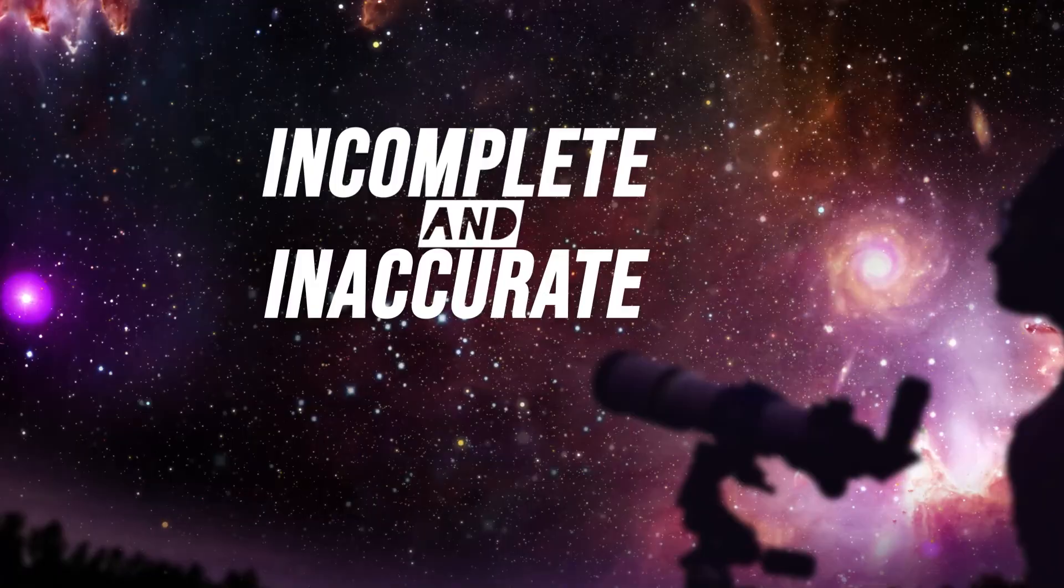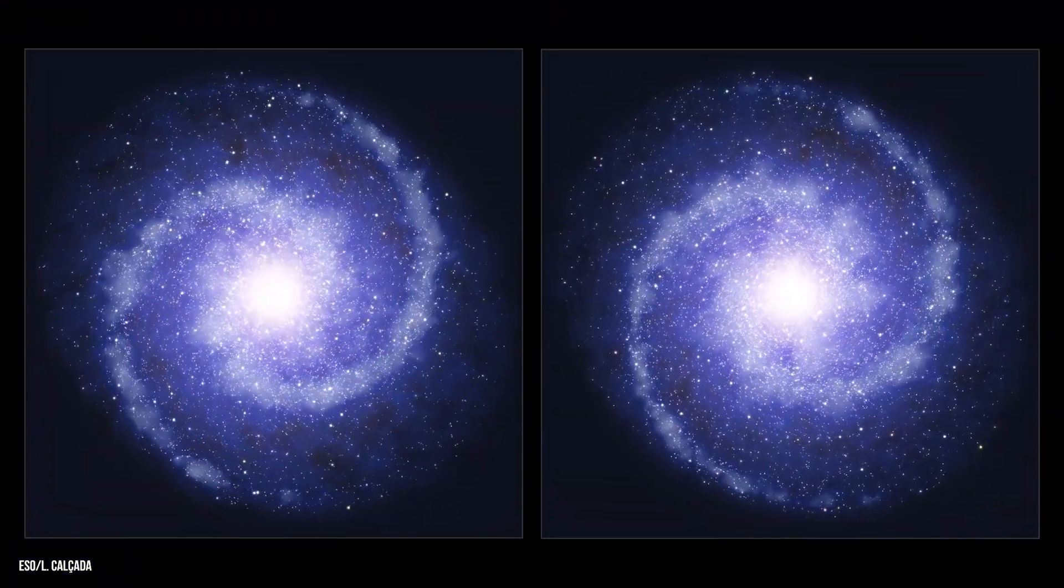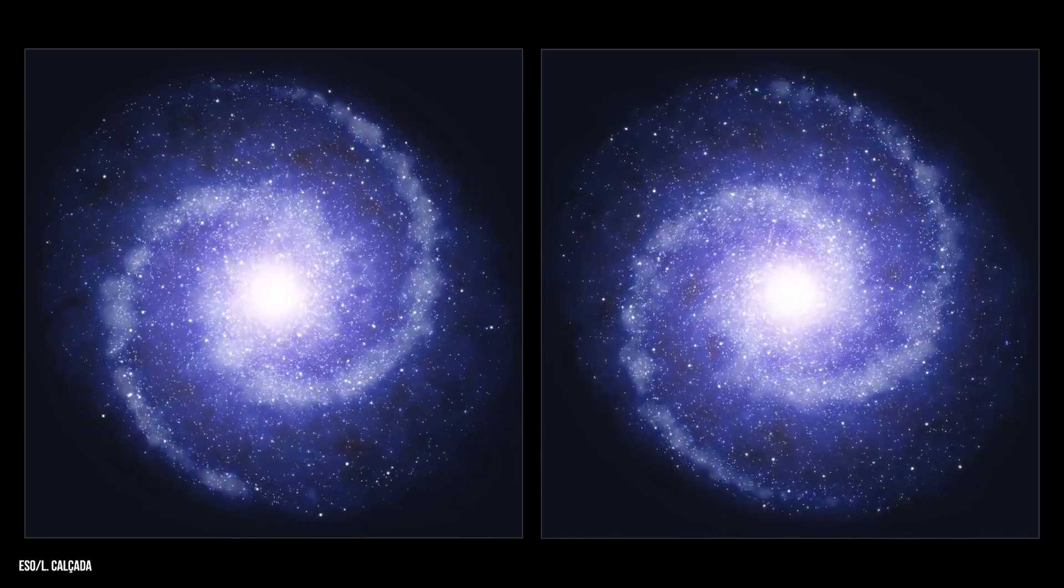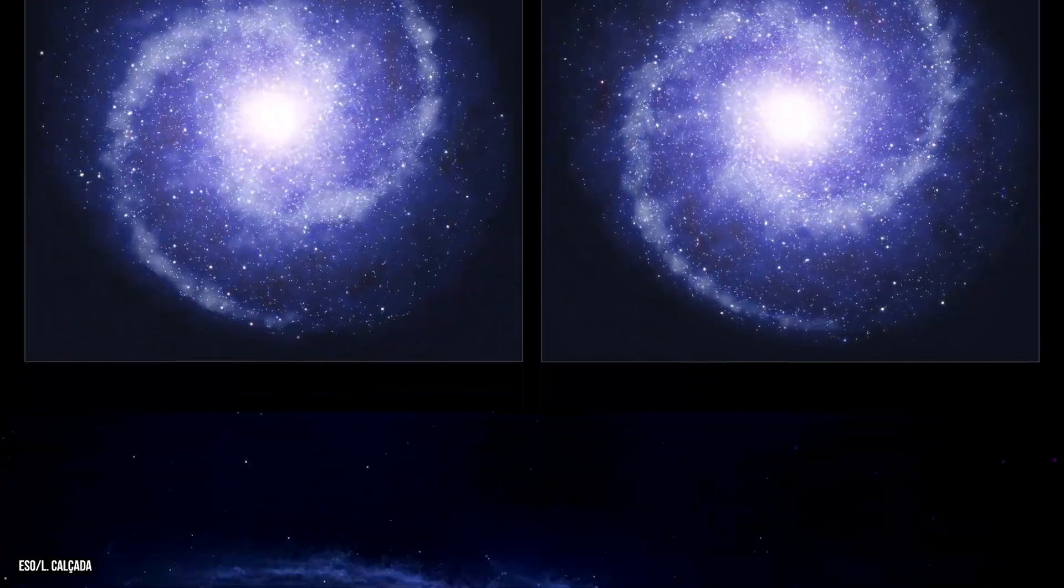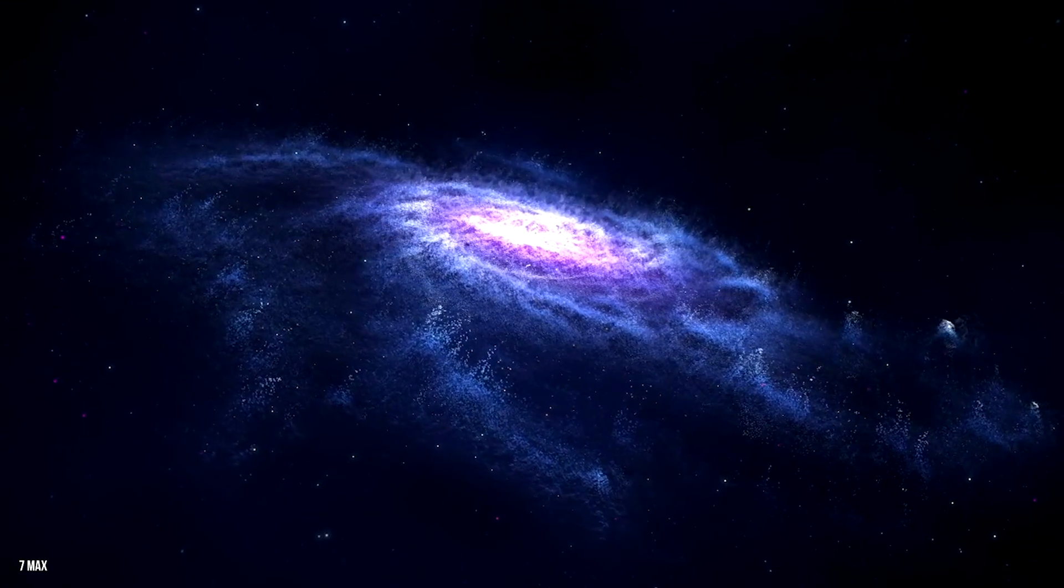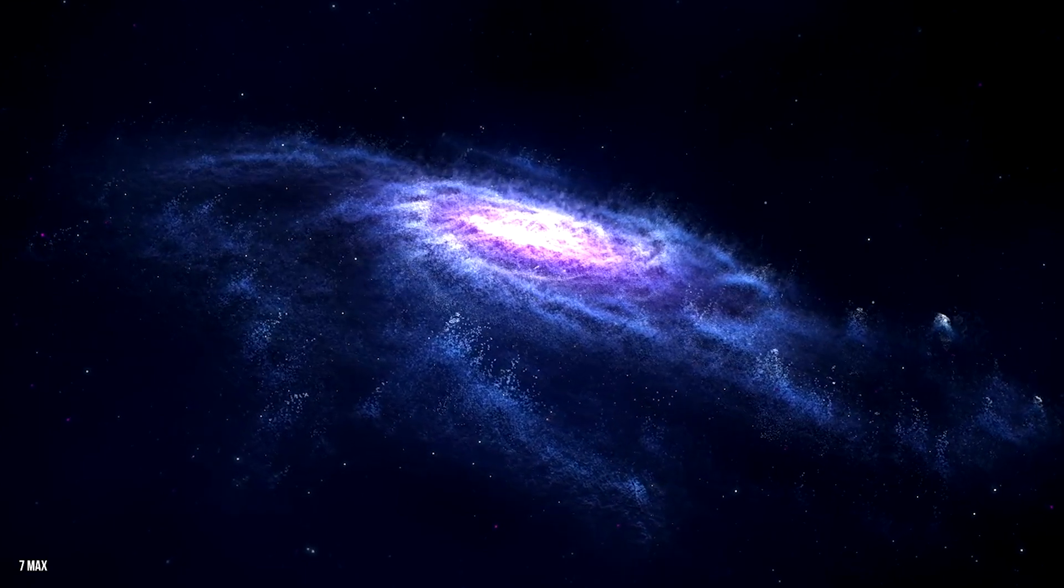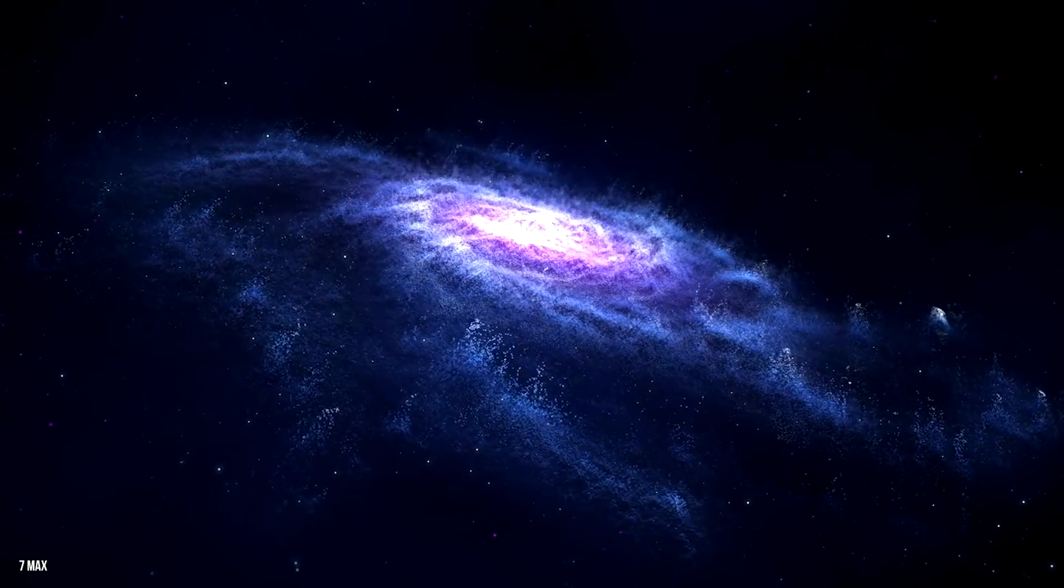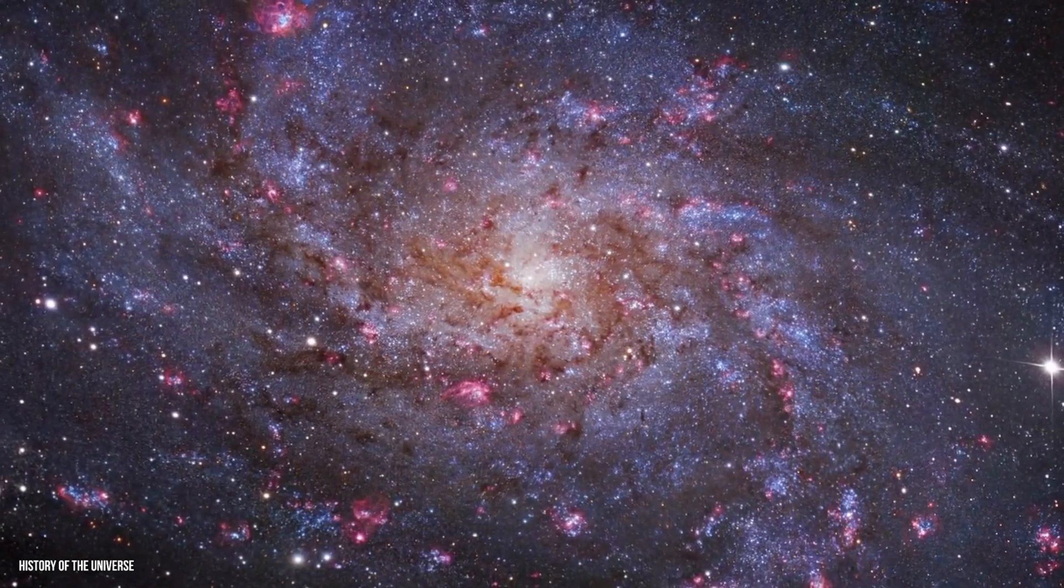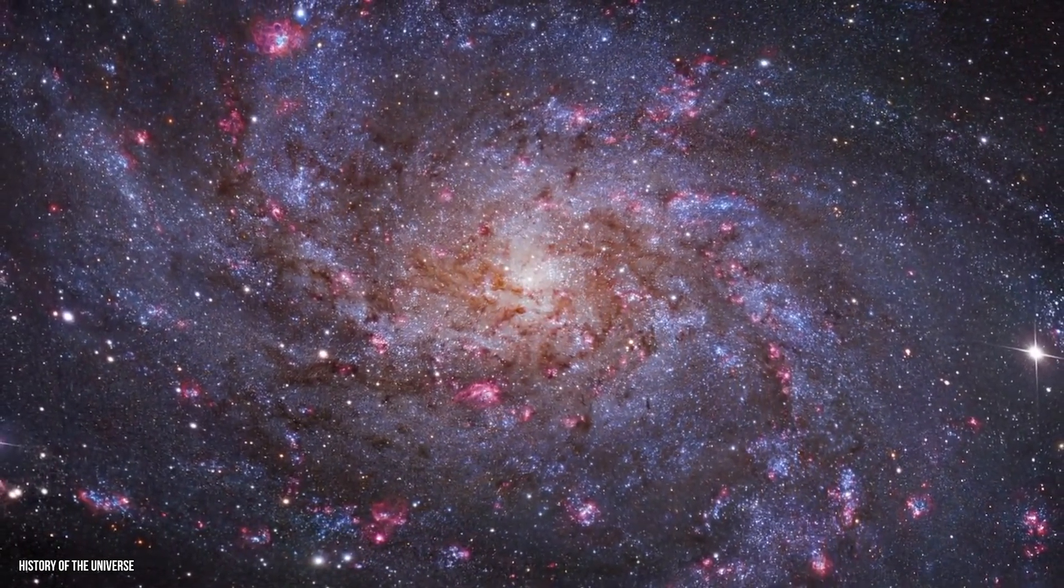Before the discovery of dark matter, scientists believed that the gravitational pull of visible matter could explain the motion of stars and galaxies. However, observations of galaxies' rotation showed that stars in the outer regions were moving much faster than they should, based on the gravitational pull of visible matter alone. This discrepancy led to the realization that there must be some invisible substance exerting a gravitational pull on these stars, and thus the concept of dark matter was born.